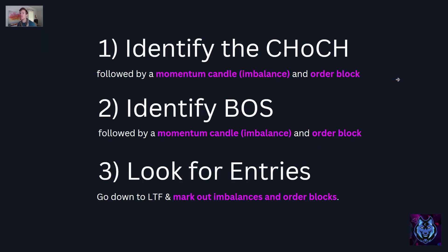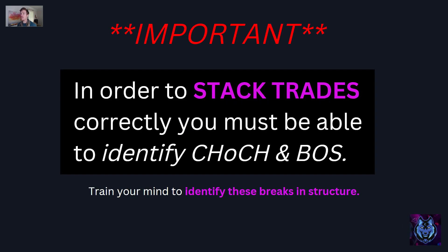The key to making this process work: number one, identifying the change of character, followed by a momentum candle, imbalance, and order block. Number two, identify the break in structures, followed by a momentum candle, imbalance, and order block. Number three, look for entries. Once we identify these changing characters and break in structures, we go down to lower time frames and mark out the imbalances and order blocks as our zones. An important notice: in order to stack trades correctly, you must be able to identify changing characters and break of structure. Train your mind to identify so that when you look at a chart, you can just pinpoint and spot them.